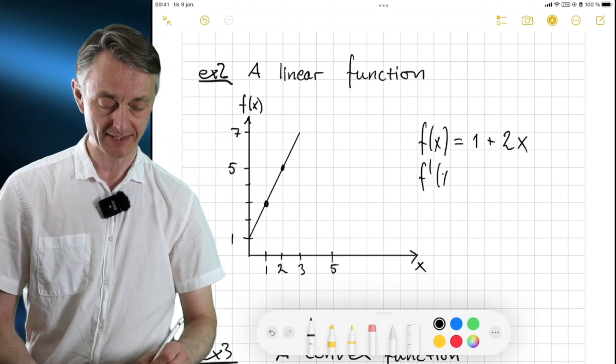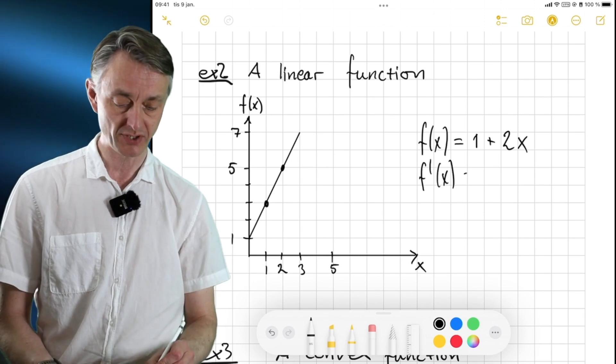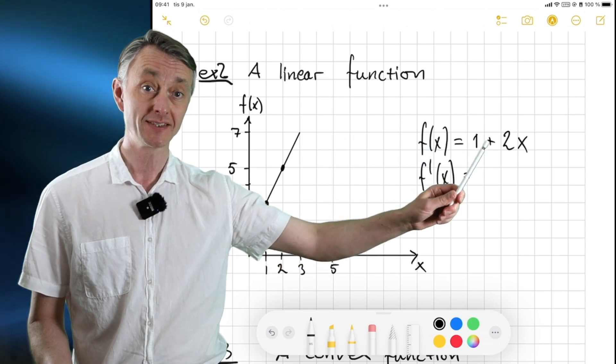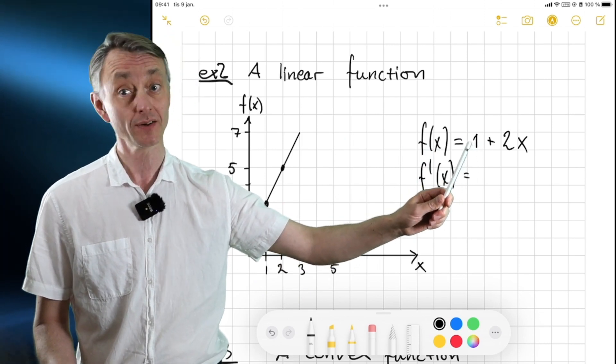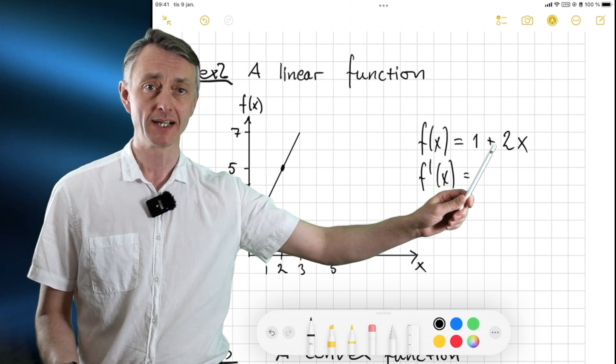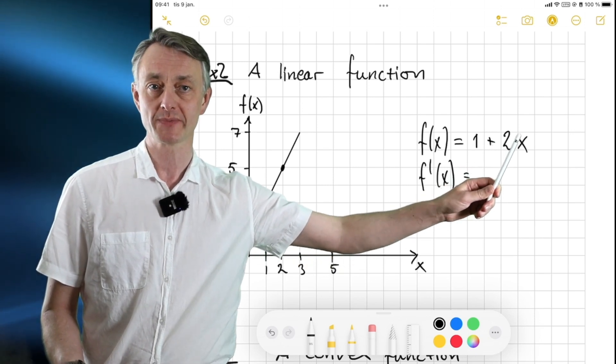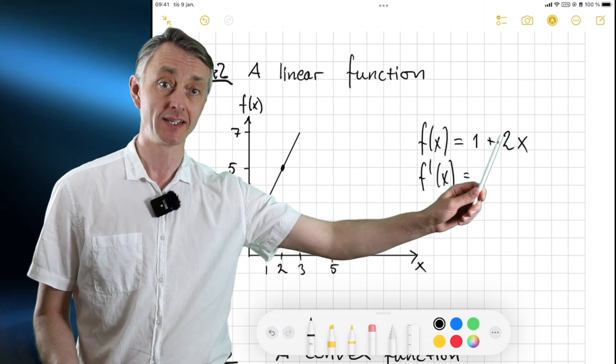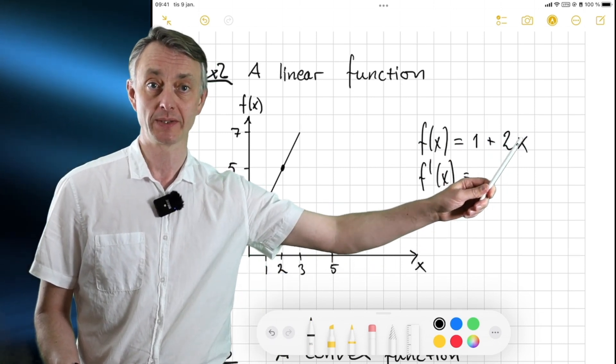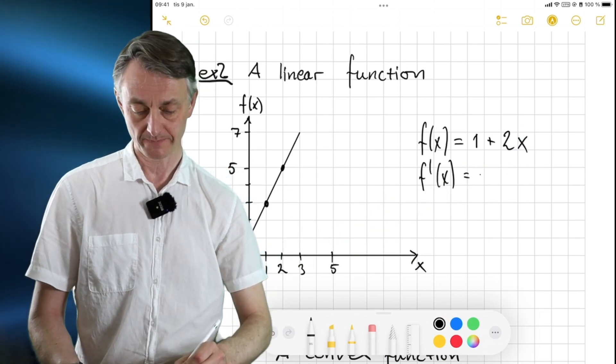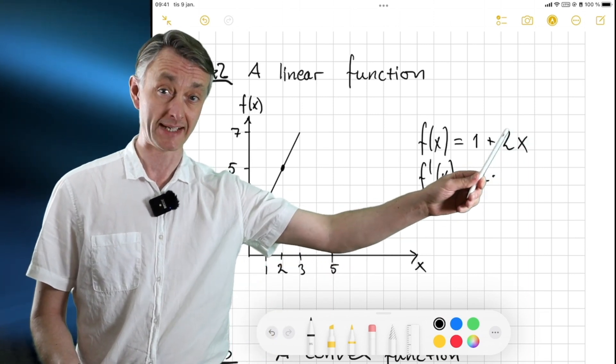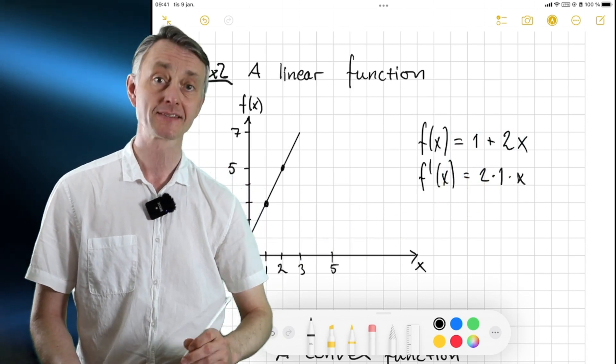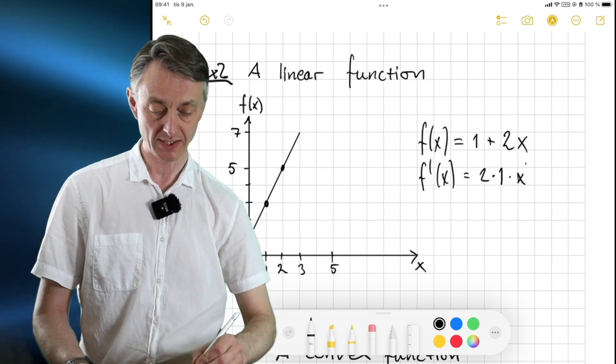So, f prime of x, then we take the derivative with respect to x of this function here. And we know that this is just a constant. And we know from before that the derivative of that is 0 plus, and then we have 2 times x to the power 1. And we know from the rules that we learned before, it's going to be the coefficient 2 times the exponent for x, which is 1, times x to the power of 1 minus 1.